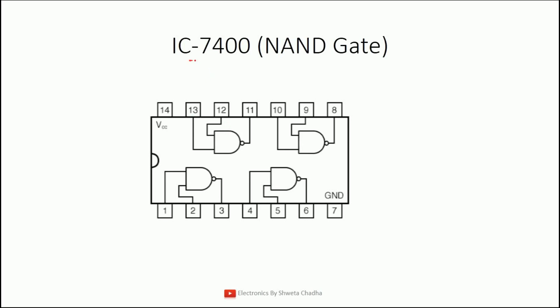Next we have 7400, the IC number of the NAND gate — again a two-input NAND gate. You will be able to verify all these gates using a digital trainer kit by checking the truth tables of all these logic gates. You can refer to my previous video for descriptions and truth tables of all these logic gates. The NAND gate IC 7400 has exactly the same pin diagram: pins 1 and 2 input, 3 output; pins 4 and 5 input, 6 output; pins 10 and 9 input, 8 output; pins 13 and 12 input, 11 output.